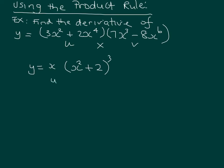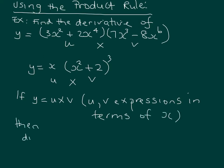In this one, the x would be u and the brackets would be v. So we use it in terms like this. The product rule states that if y equals u times v, where u and v are expressions in terms of x, then the derivative dy/dx equals vu' + uv'. You can write that one down as your formula in your theory.